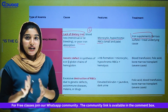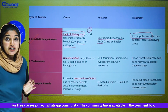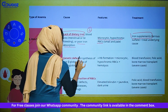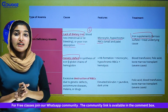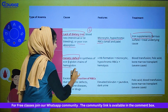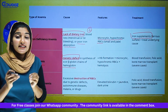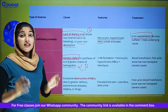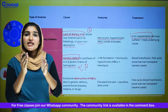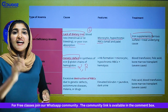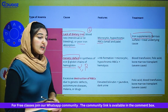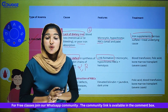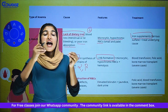Now let's talk about thalassemia. Thalassemia is a genetic defect. In thalassemia, there is a genetic defect in the hemoglobin protein. Hemoglobin has an alpha and beta chain. There is a defect in either the alpha or beta chain of hemoglobin, which is called thalassemia. The features include decreased hemoglobin formation and microcytic and hypochromic RBC.